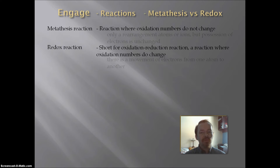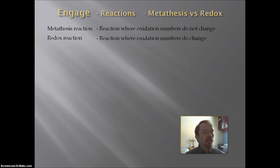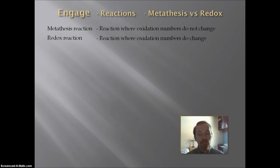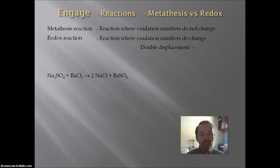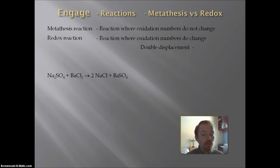We're going to keep those definitions in mind and try to identify the five reaction types we have learned in terms of metathesis and redox. We're going to start with a double displacement. A sample double displacement could be the reaction of sodium sulfate and barium chloride to yield sodium chloride and barium sulfate.